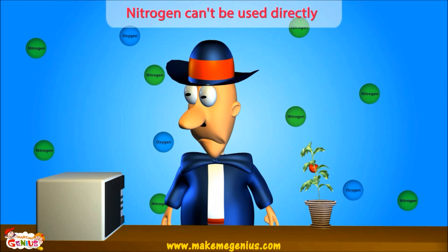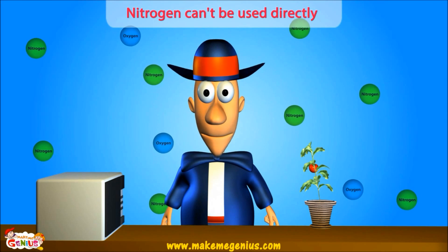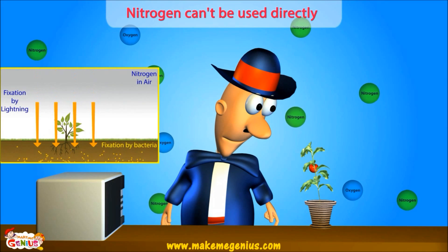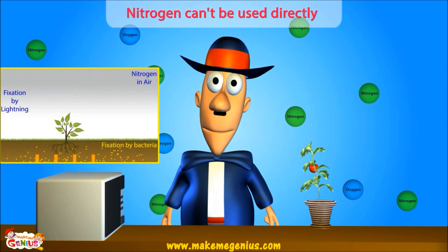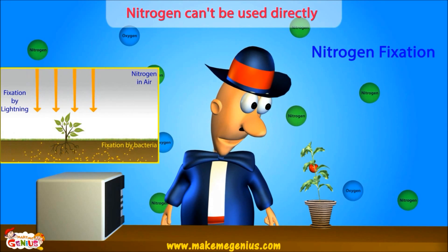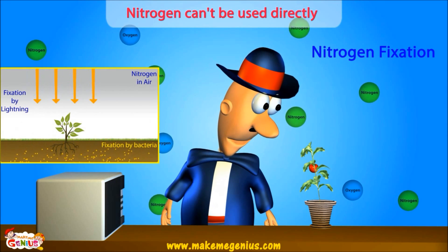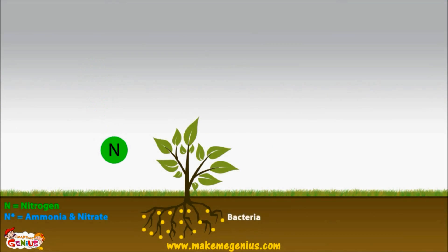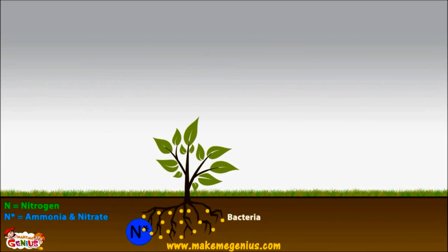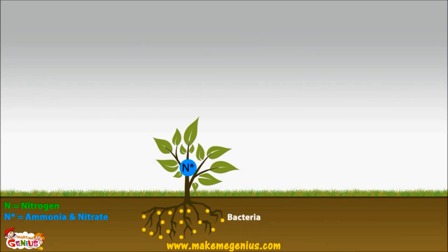Nitrogen must be fixed for plants to use. Lightning and some bacteria that live in certain plants can fix the nitrogen in air — this is called nitrogen fixation. Special plants called legume plants have this bacteria in their roots; for example, soybean plants help fix nitrogen. The bacteria in soil turns nitrogen into ammonia and nitrates, which plants can then use to grow.